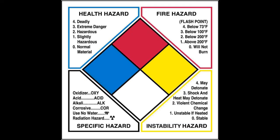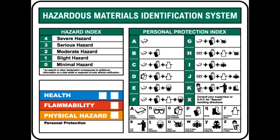The last signage to review is the Hazardous Materials Identification Index. You can see the HMIS label in the bottom left corner. The hazard index shows severity levels — severe, serious, moderate, etc. — and a personal protection index showing what equipment is needed depending on the type of hazard. You don't have to memorize these labels necessarily, but know what the colors mean in the NFPA diamond and HMIS label.